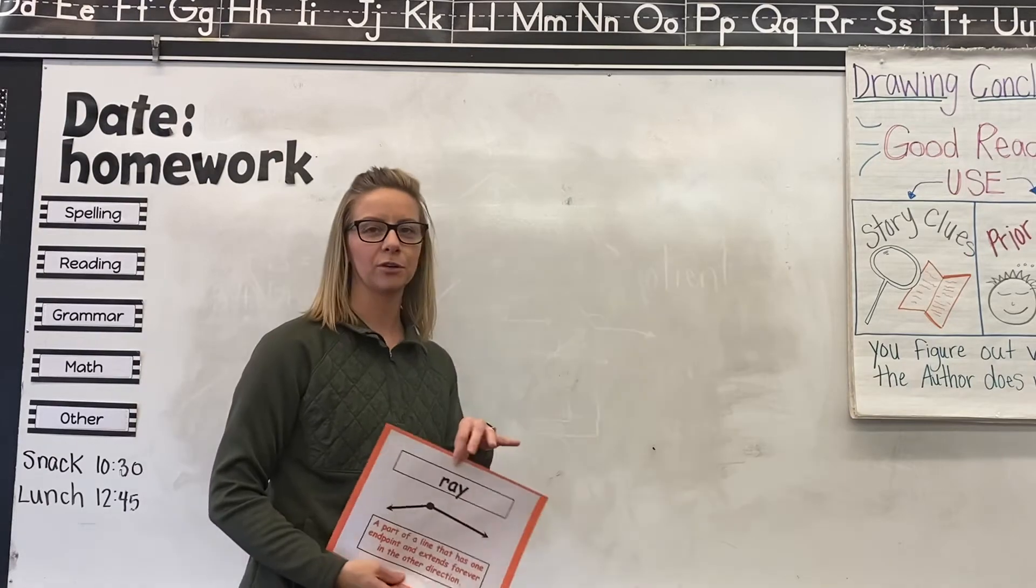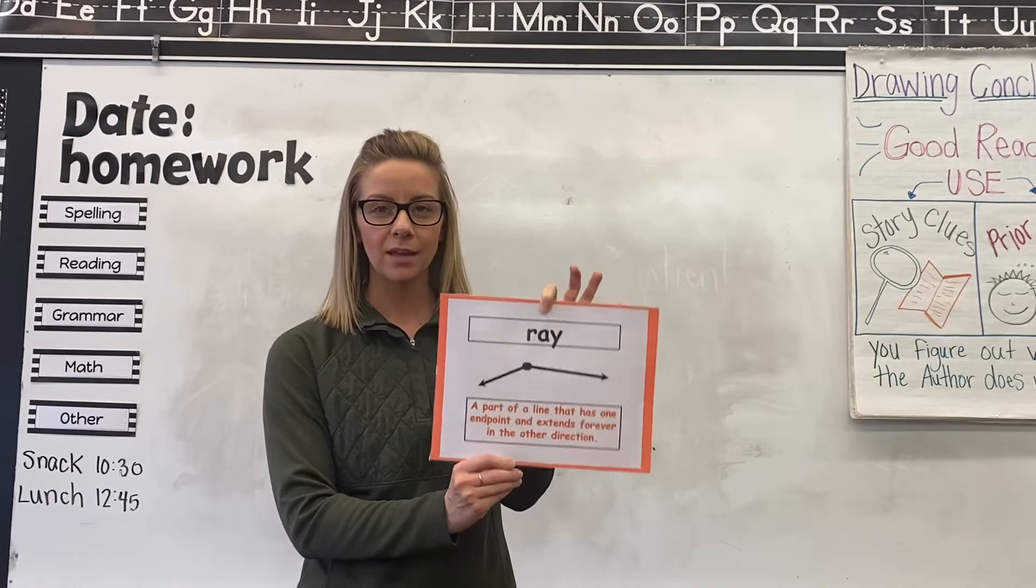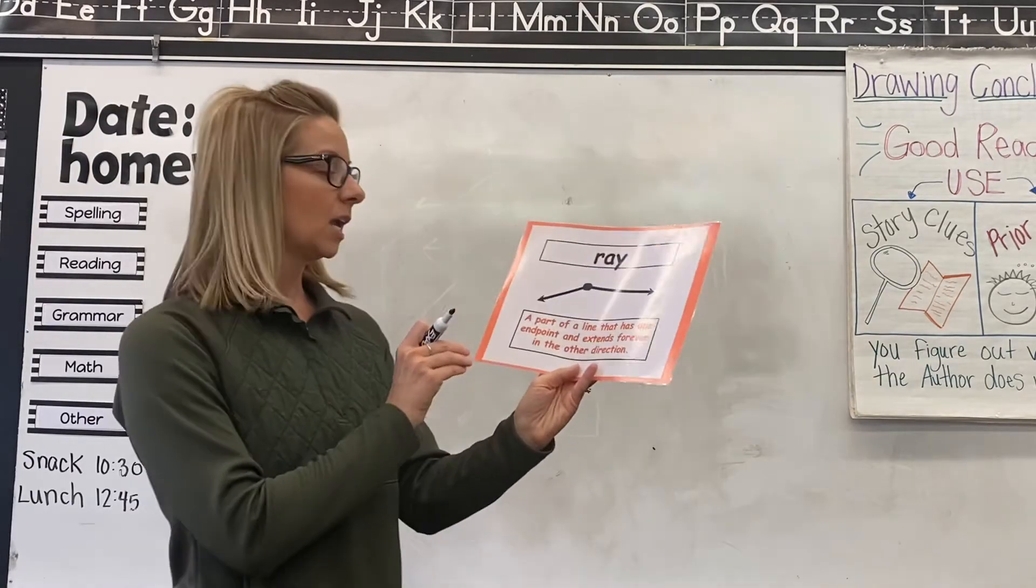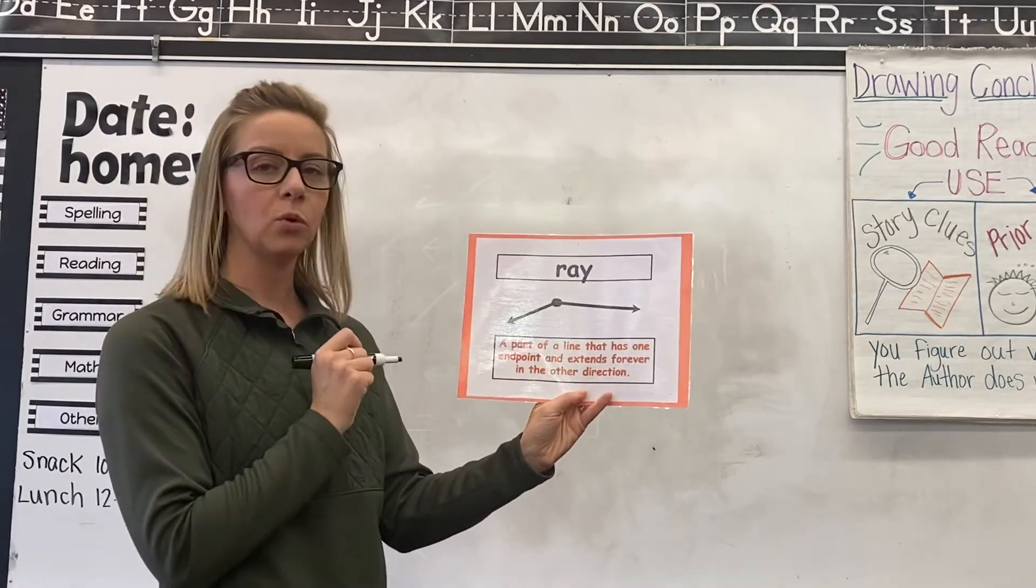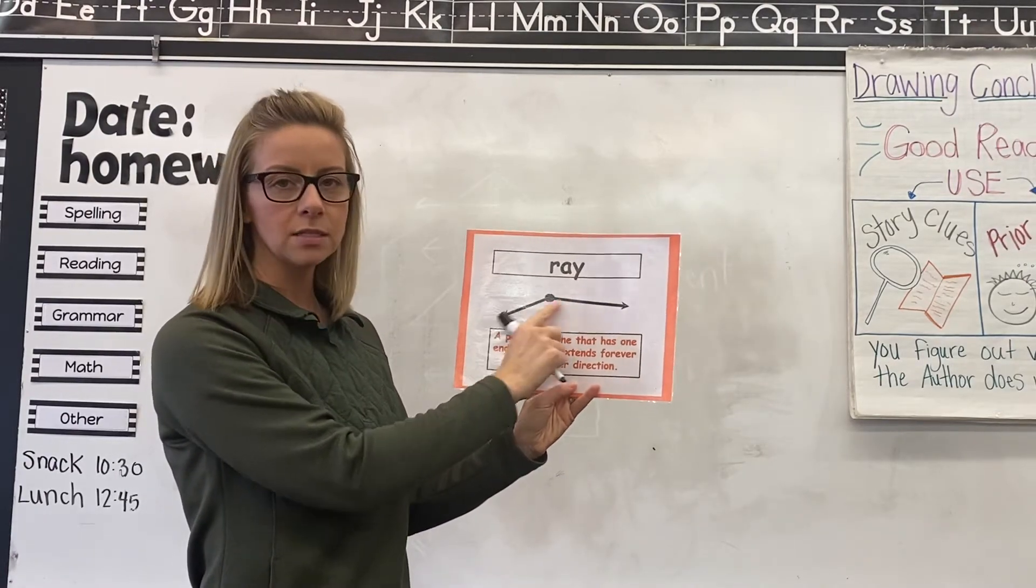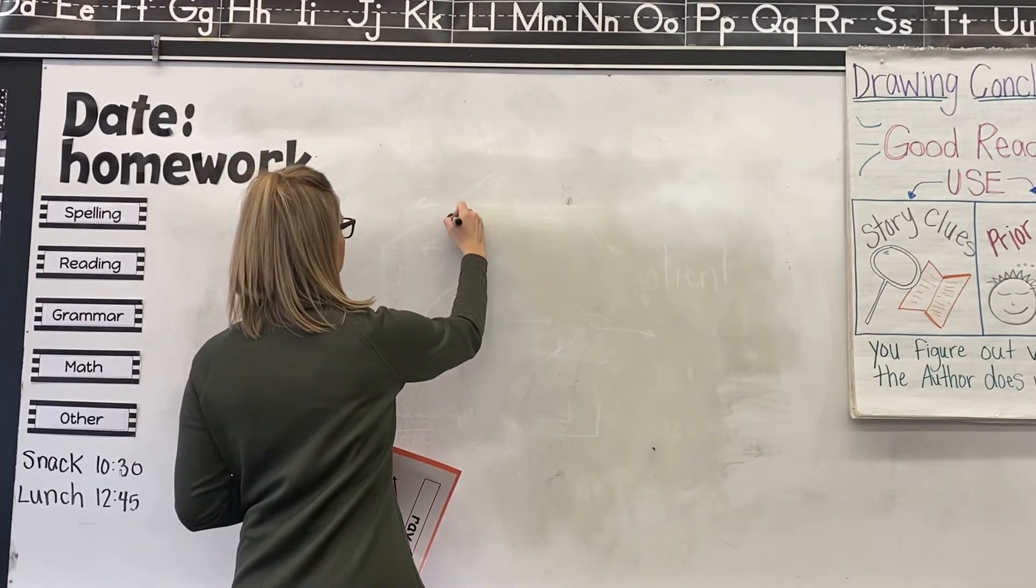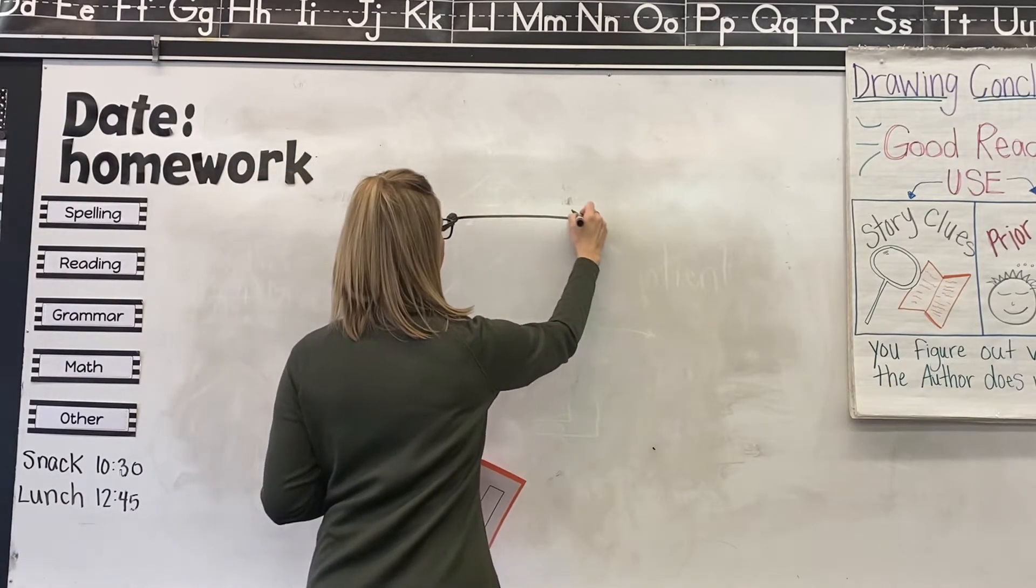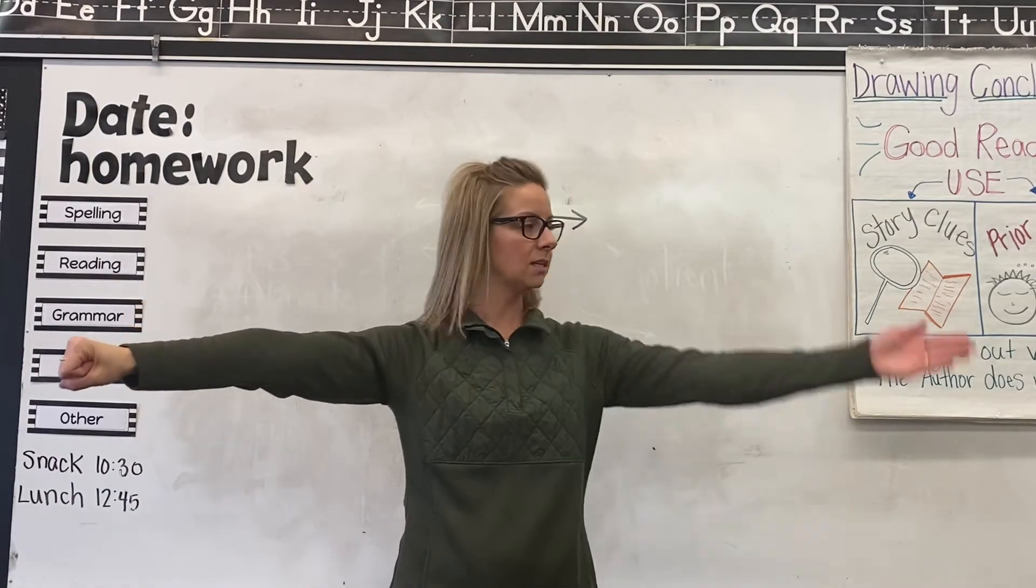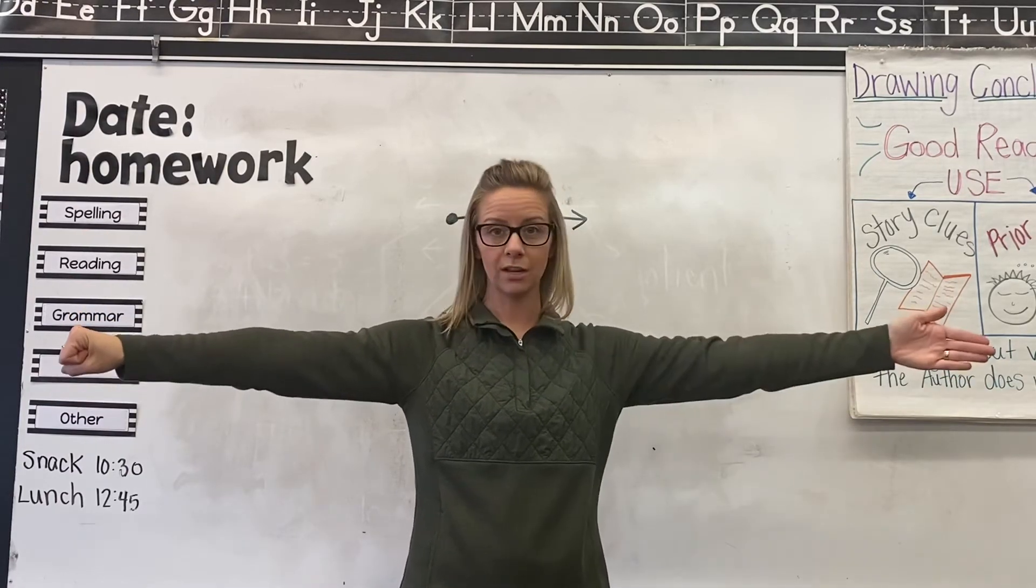Alright, so let's get into our vocabulary words. The first one for lesson two is called ray. Don't confuse this with a ray, it's just ray. And a ray is a part of a line that has one end point and extends infinitely in another direction. This picture is actually showing two rays put together at the same end point. So let me show you a picture of a ray. One end point and it extends infinitely in the opposite direction. So our motion for this is going to be fist on one end and your hand out in the other to show that one end has the end point and the other end goes on and on forever.